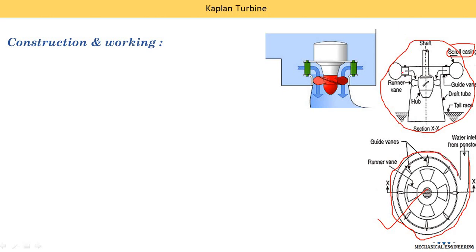From the scroll casing, water is supplied to the guide vanes. Here, this is a guide vane — there are a number of vanes installed on this guide wheel, and we see them on both sides in the front view because it is a circular component. After the guide wheel, water is supplied into the runner. This part is the runner — here you can see the runner mounted on this shaft.